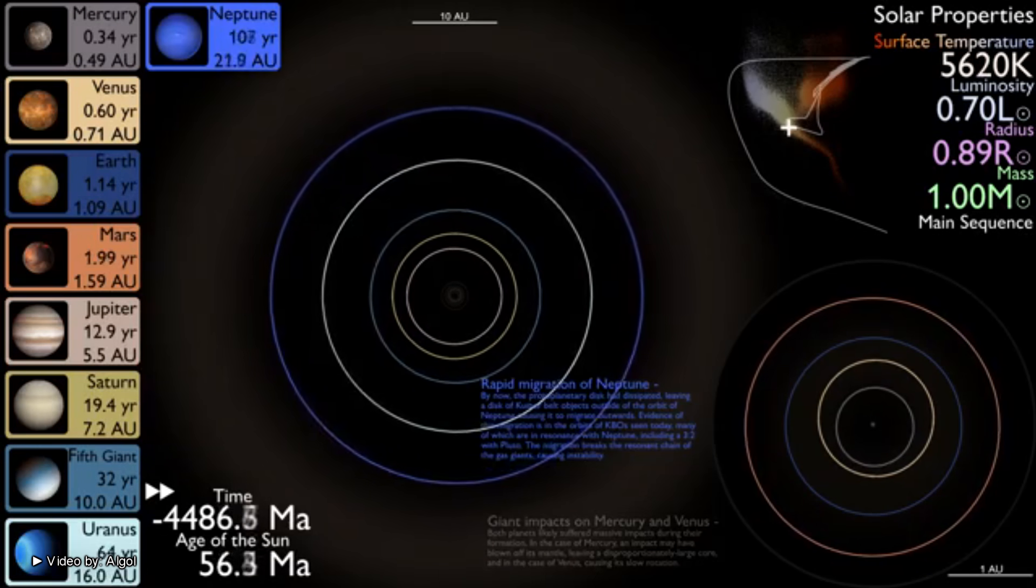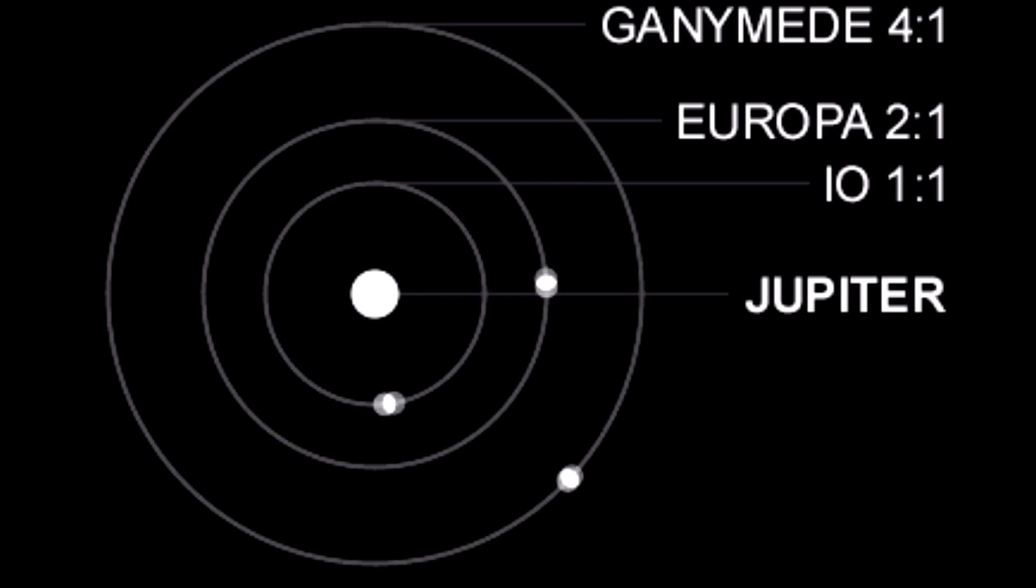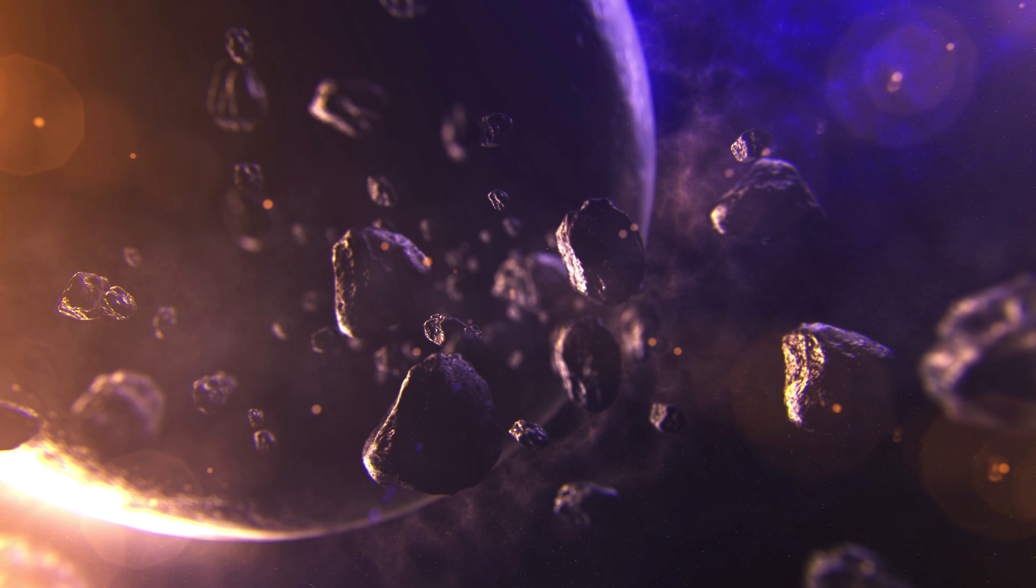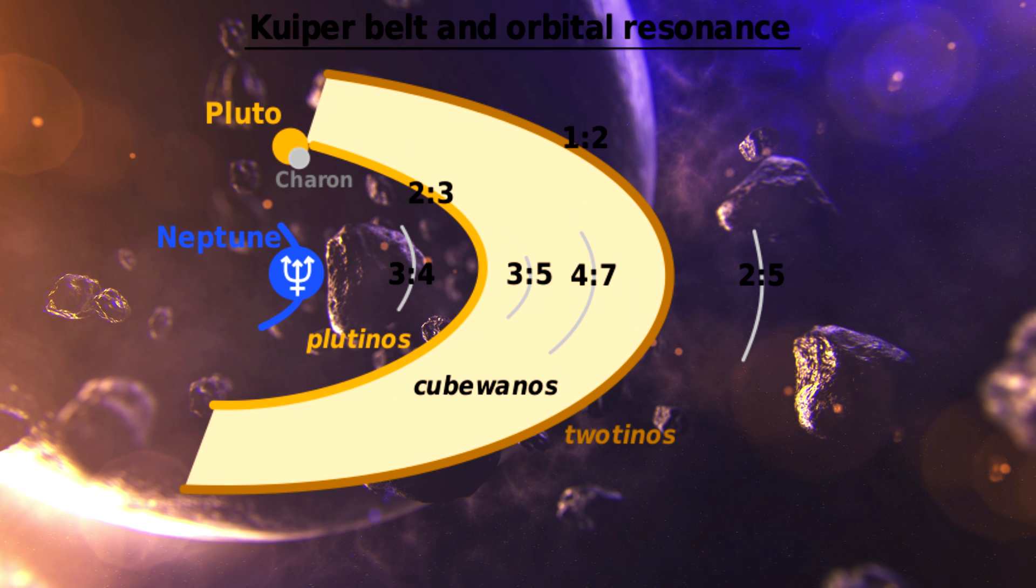the gas giants of our solar system establish an orbital resonance. Orbital resonance is the phenomenon that occurs when orbiting bodies exert regular periodic gravitational influence on each other, usually because their orbital periods are related by a ratio of small integers. By this time, the majority of the Sun's protoplanetary disk had been cleared, leaving a primordial Kuiper belt beyond the reaches of Neptune.